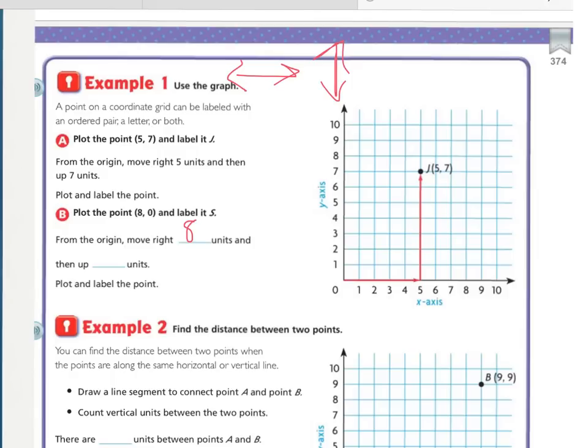Our second number, the x, I mean the y-coordinate, is the 0. So, we're actually not going to be going up at all. We're going right 8, and then I'm not going up any. I'm going to put my point right there, and then we need to label it S. Right next to it, we're just going to make an S. It didn't tell us to use both, so that S is all we need.